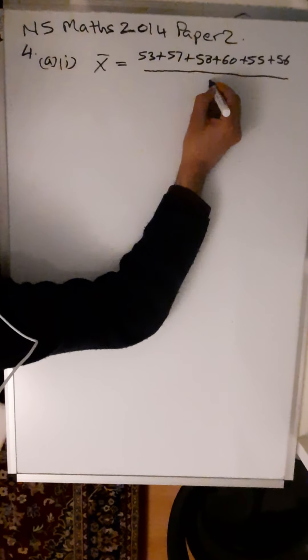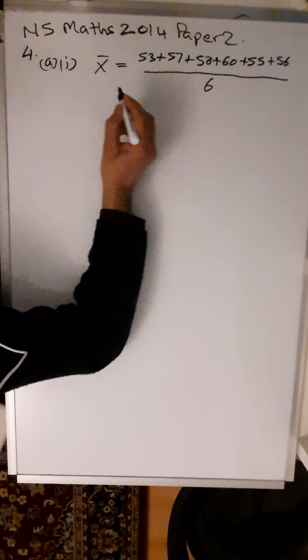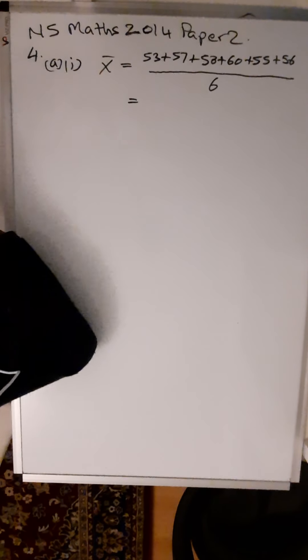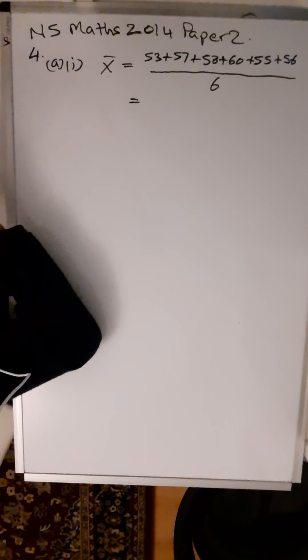National 5 Maths 2014 Paper 2, Question Number 4. A runner has recorded her times in seconds for six laps of a running track.